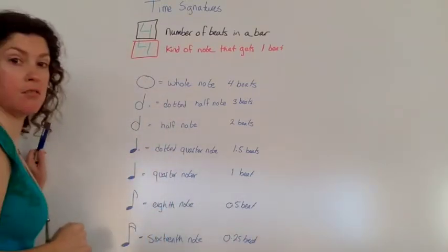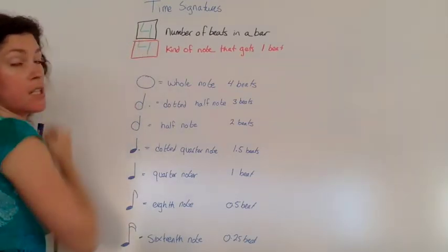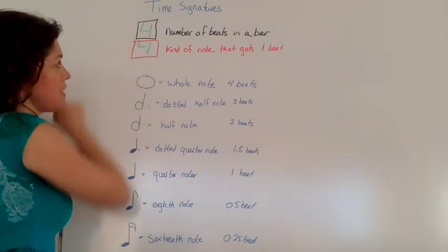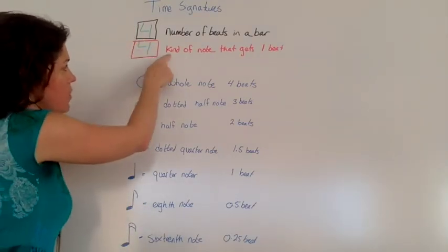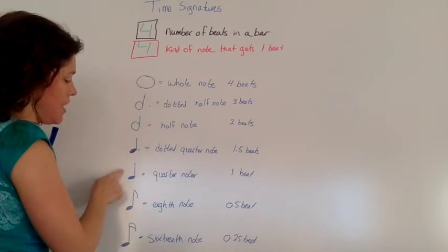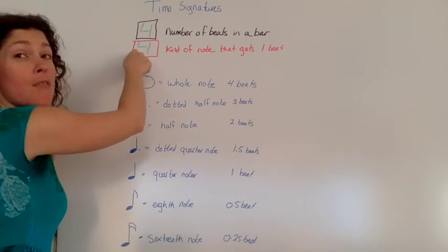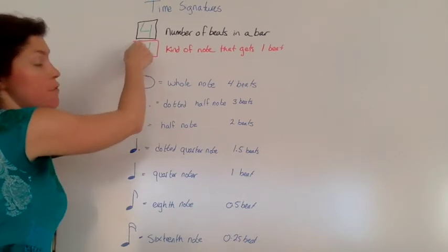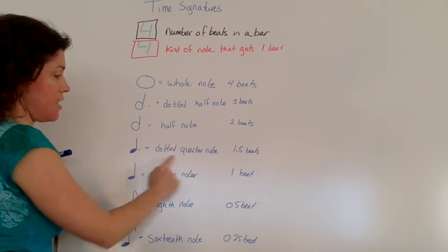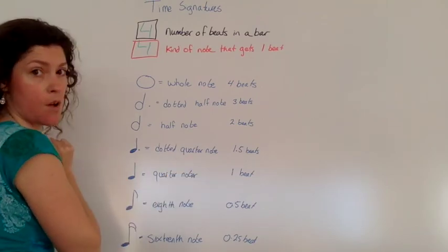So, right now, 4-4 time, we have four beats. We have four beats in the bar, and the kind of note that gets one beat is our quarter note. And I know that because of our fractions in math, the 4 says quarter. Okay?